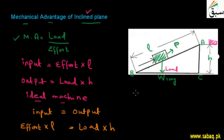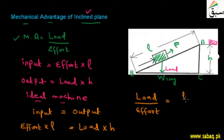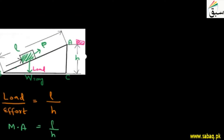In the ideal machine case we have considered. Now, if I define the mechanical advantage as load divided by effort, and I rearrange the equation effort × L = load × H, I get: load divided by effort equals L divided by H. So the mechanical advantage of the inclined plane is L upon H.